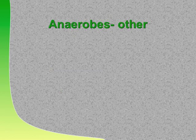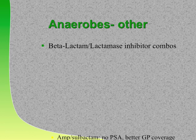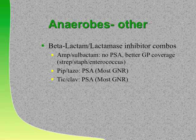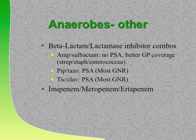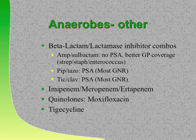What other drugs kill anaerobes? The beta-lactam/beta-lactamase inhibitor combos—Unasyn, Zosyn, and Timentin—cover anaerobes above and below the diaphragm. So do the carbapenems. Which quinolone has the best anaerobic coverage, which could actually be a bad thing? Moxifloxacin. And tigacycline also has anaerobic coverage.